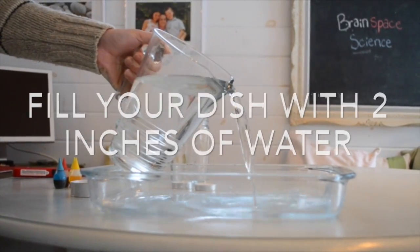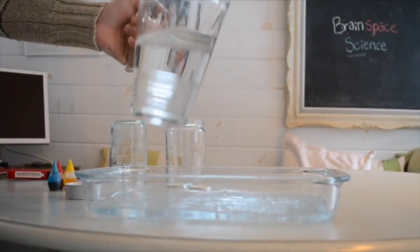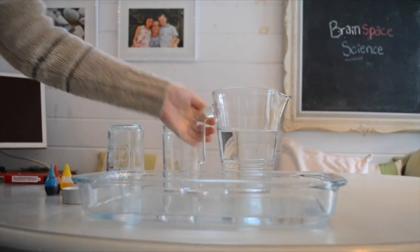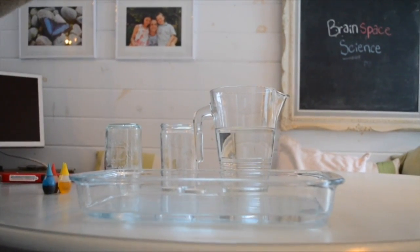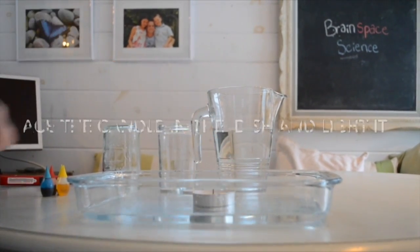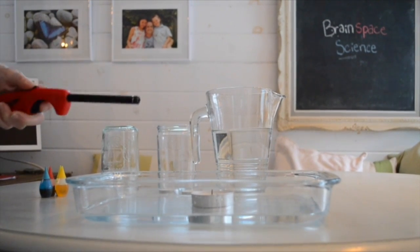Pour about 2 inches of water into the bottom of your glass pan. Once you've done that, take your candle and have an adult light it again. Do not attempt this on your own. Light that candle.